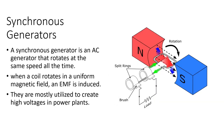A synchronous generator is an AC generator that rotates at the same speed all the time. When a coil rotates in a uniform magnetic field, an EMF is induced. Synchronous generators are mostly utilized to create high voltages in power plants.